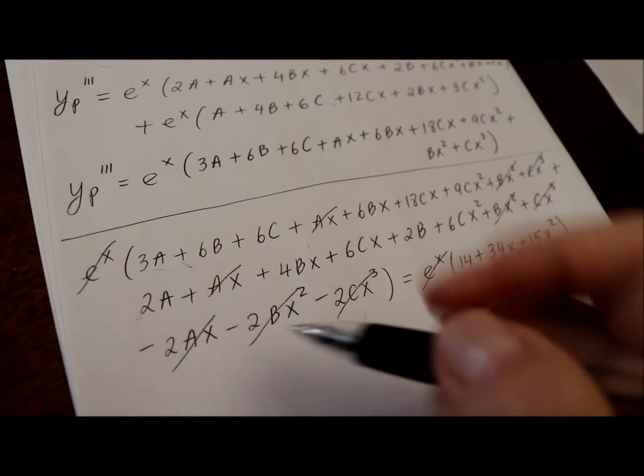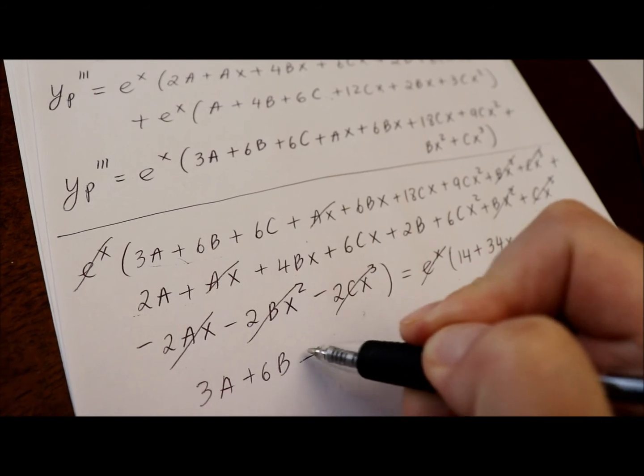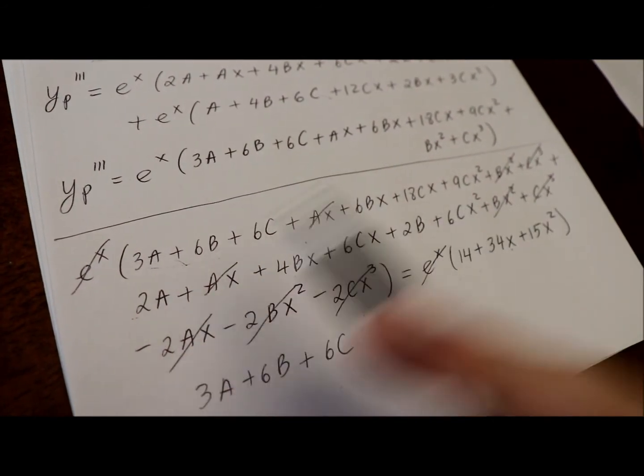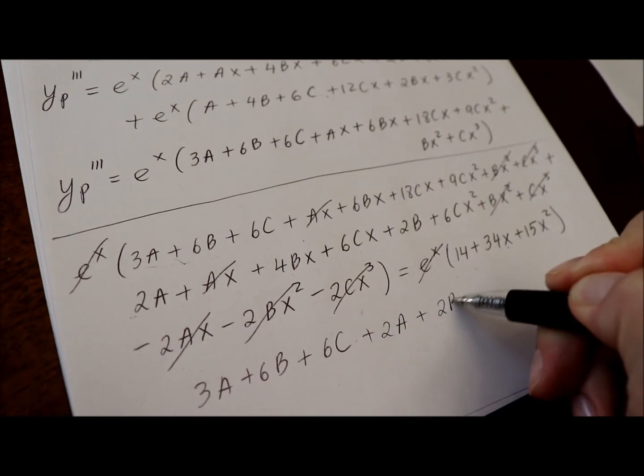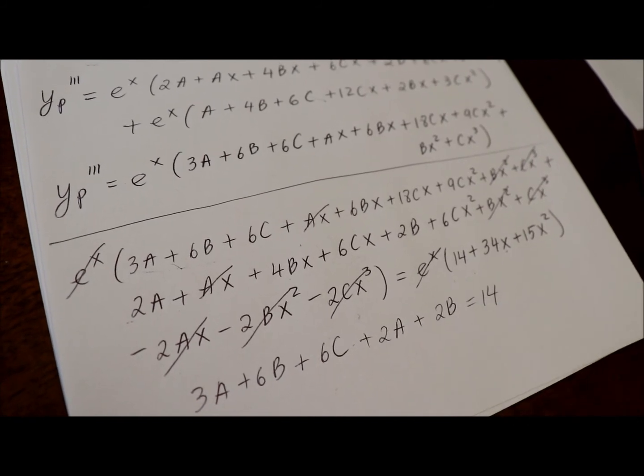we have our constants 3a plus 6b plus 6c plus 2a plus 2b equals 14. Then,